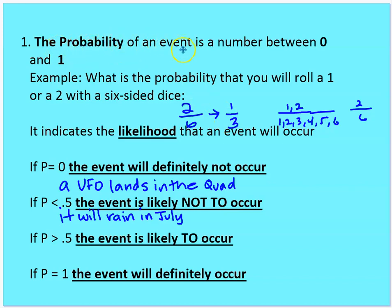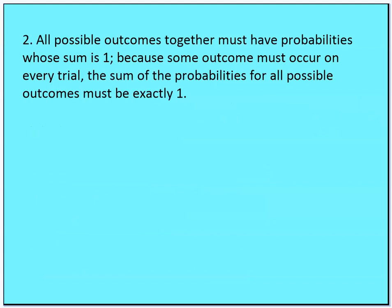Rule number one: the probability of an event is a number between 0 and 1 inclusive. 1 means it will definitely occur, 0 means it definitely will not occur, and everything in between leans either more toward certain or more toward definitely not.